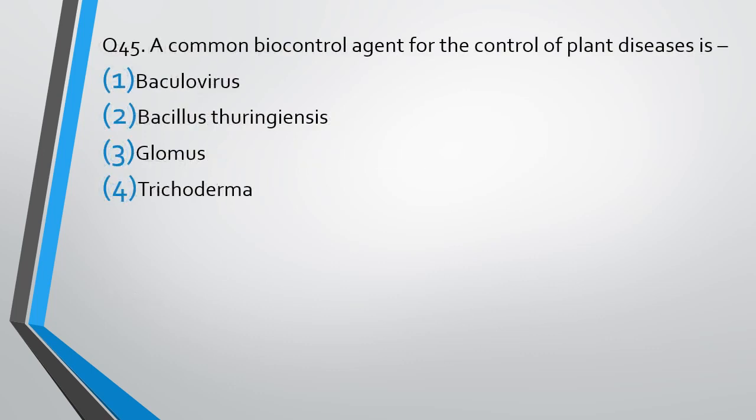Question number 45. A common biological agent used for controlling plant disease is: Baculovirus, Bacillus thuringiensis, Glomus, or Trichoderma? The correct answer is Option 4, Trichoderma.